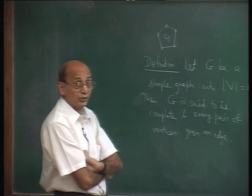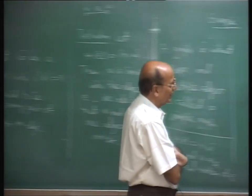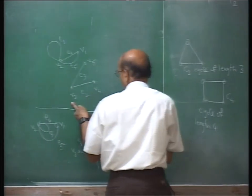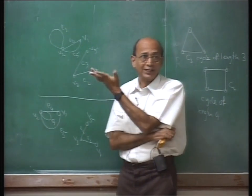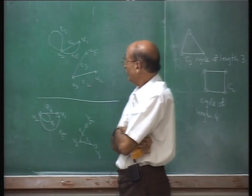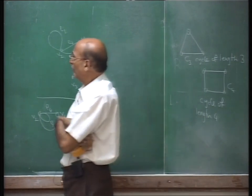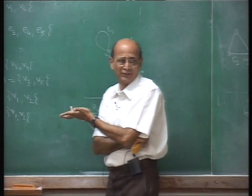Adjacency for us is a symmetric relationship — that is clear from the way it is defined. If v and w are adjacent, then w and v are also adjacent. It is not transitive at all. For example, v5 and v3 are adjacent, v3 and v4 are adjacent, but v5 and v4 are not adjacent. Also, whenever you have a loop, the vertex is adjacent to itself.